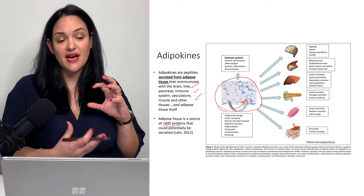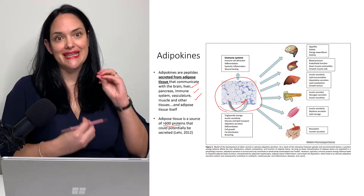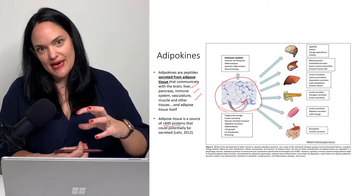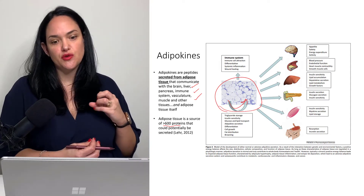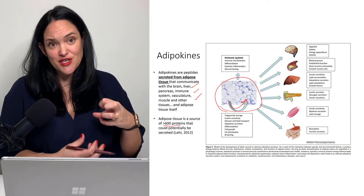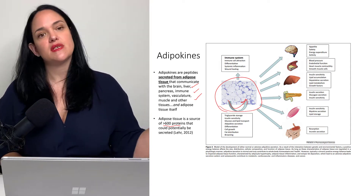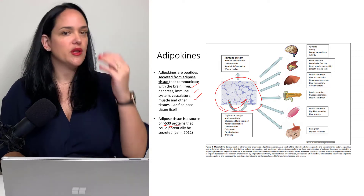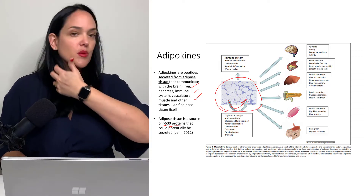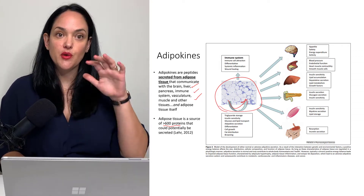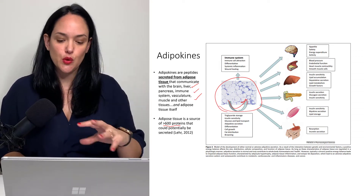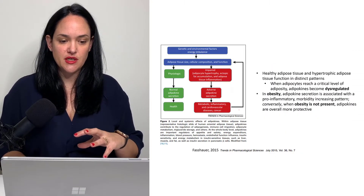Adipokines are something that really links adipose tissue and energy status with the immune system — something that's going to become really important when we start talking about obesity and low-grade inflammation.